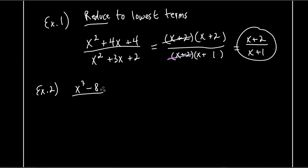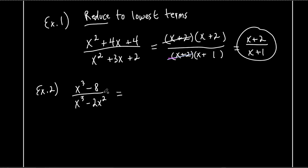The problem: can you cancel out the x³ on top with the x³ on the bottom? It looks like you can, but you can't. This x³ is being subtracted by something — division and subtraction are not inverses of each other. You can only cancel out if the term is being multiplied by something else. Since x³ is being subtracted by 8, you cannot cancel them out. So what can we do? Factor. This is one of our special ones — the difference of two cubes.